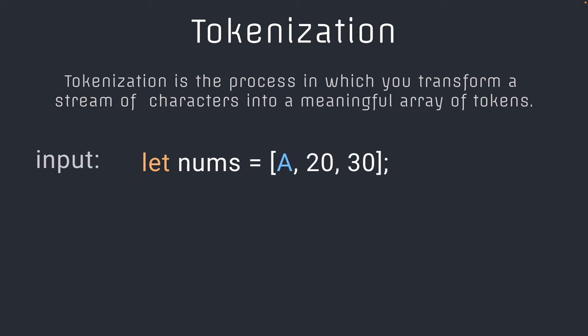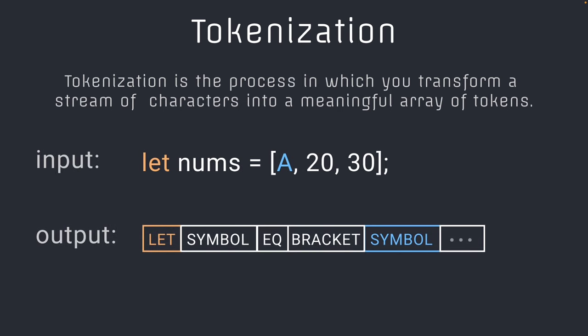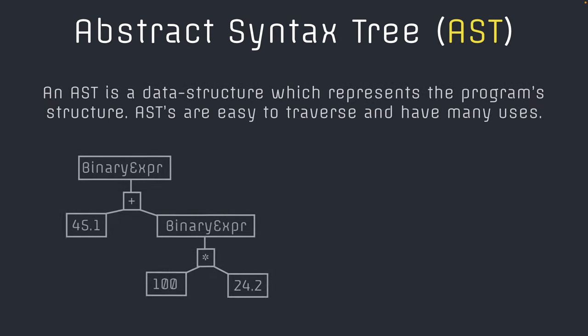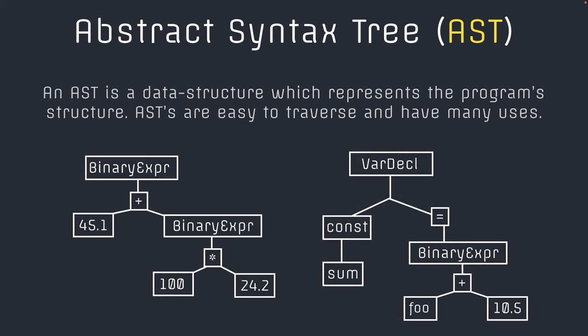To get started with parsing, the first two episodes of the series are going to be working on tokenization. Tokenization is the process where we take the source code and translate it into tokens. For example, 'let nums' would produce a token of a let token and a symbol token, where the value is nums. The goal of tokenization is to split up the source code into meaningful tokens that we can understand and then use with parsing into the AST. An AST stands for Abstract Syntax Tree. It is a tree data structure which we're going to be using to represent our program.